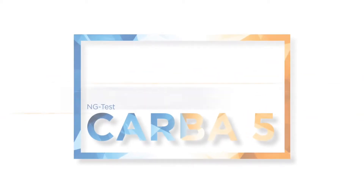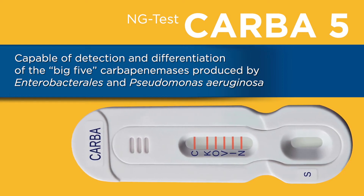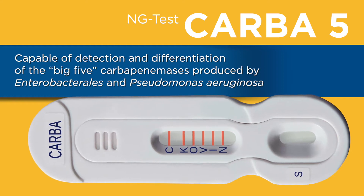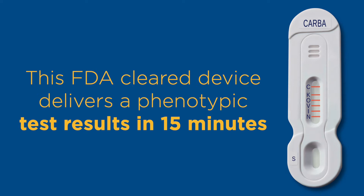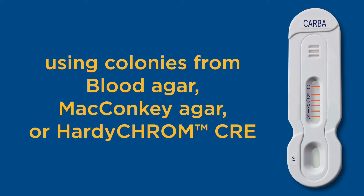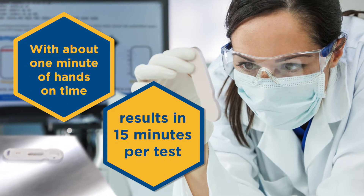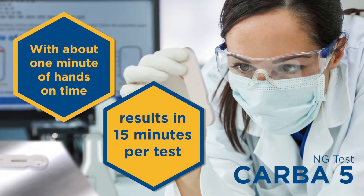Introducing NG-Test CARBA-5, a rapid multiplex lateral flow assay capable of detection and differentiation of the big five carbapenemases produced by Enterobacteriales and Pseudomonas aeruginosa. This FDA-cleared device delivers a phenotypic test result in 15 minutes using colonies from blood agar, MacConkey agar, or chromogenic CRE agar. With about one minute of hands-on time and results in 15 minutes per test, NG-Test CARBA-5 naturally fits into any lab's workflow.